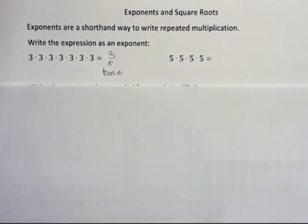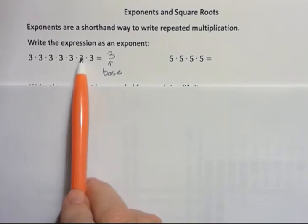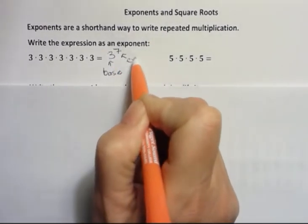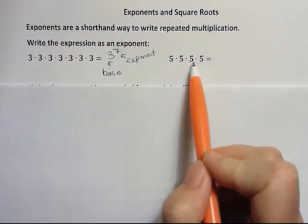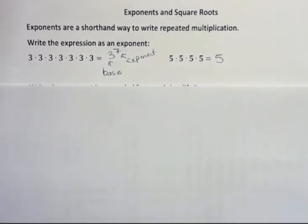And then the number of times that it's repeated — 1, 2, 3, 4, 5, 6, 7 — that is our exponent. So 3 to the seventh power is the exponential form of that repeated expression. How about 5 times 5 times 5 times 5? Well, the base is 5 because that's the number that's being repeated. How many times it's repeated is 4, so the exponent is 4.